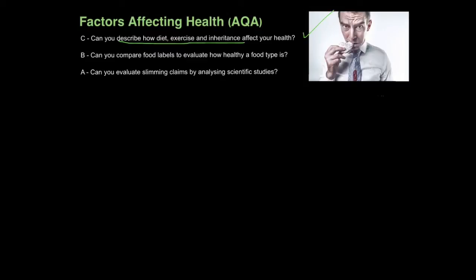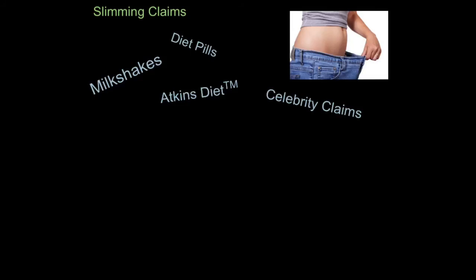And that is how you compare food labels to evaluate how healthy a specific food type is. Now let's look at evaluating slimming claims. There are certain products that claim they will help you lose weight very quickly, and we need to look at these critically before spending money on them. Products such as milkshakes and diet pills, outrageous celebrity claims about losing weight rapidly, and controversial diets like the Atkins diet — which allows you to eat fatty foods at the expense of reducing your carbohydrate intake — all need scrutiny.